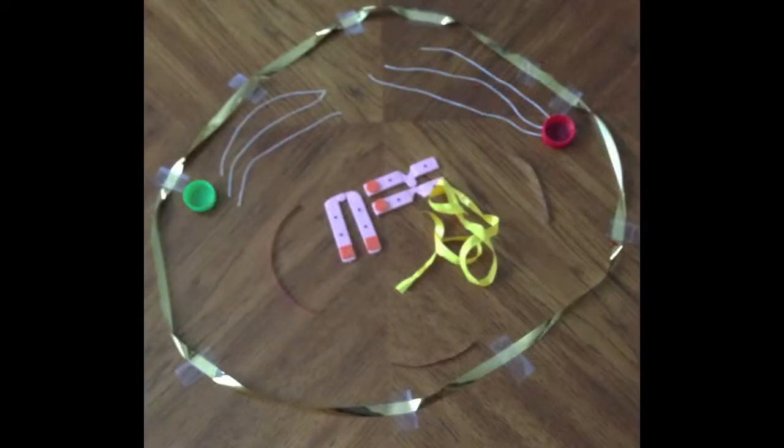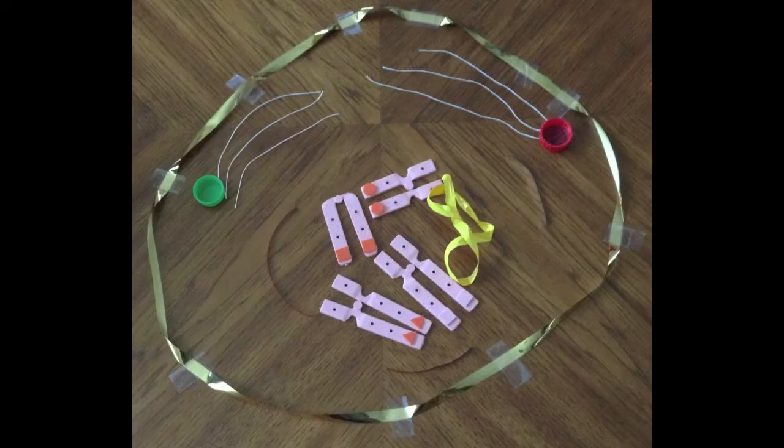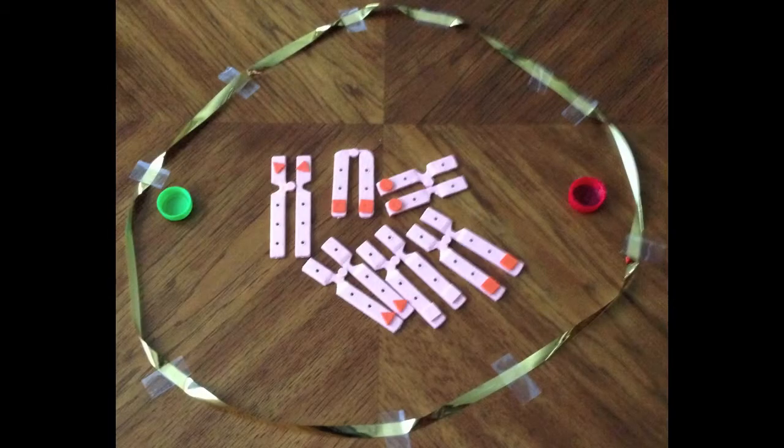Next, the centrosomes move apart from each other and go to opposite poles of the cell. Along with this, the chromosomes begin to duplicate, which happens during the S phase of interphase.